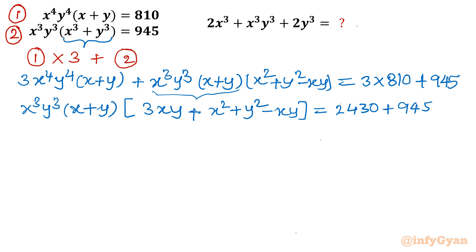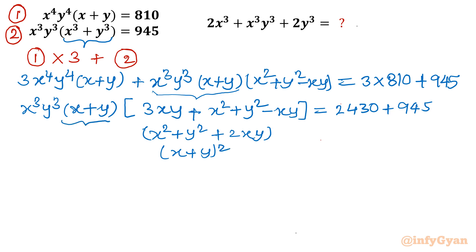Now I see that the bracket contains x² + y² + 2xy, which is (x + y)². In the next step I can write x³y³ · (x + y) · (x + y)² = x³y³ · (x + y)³. The RHS is 2430 + 945 = 3375.